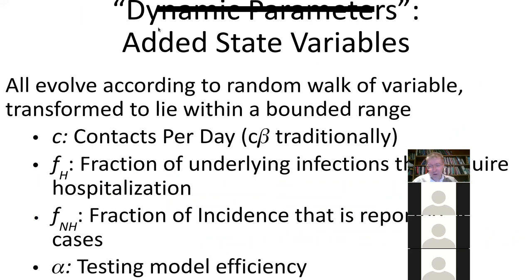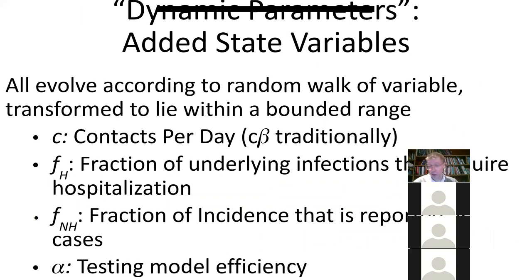We also have something we call dynamic parameters. These are basically things which function as parameters — like C, the contacts per day, or C-beta together, for those familiar with infectious disease models. But this evolves over time in ways we can't predict — we don't know how many people are going to gather on Easter, we don't know how many people are going to be out without masks. We don't know what the contact rate is, so we treat it as evolving in a random walk and use particle filtering to estimate what it really is at any one time.